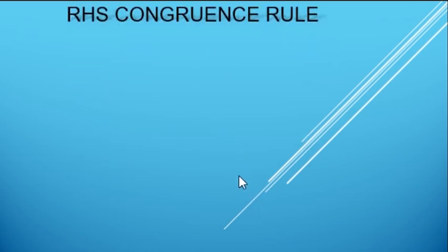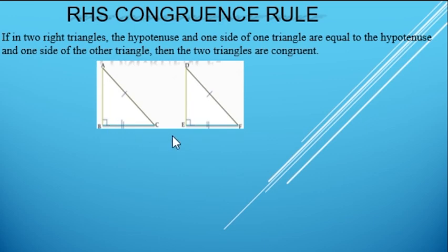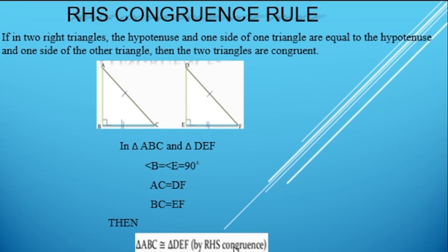Next, we have the last rule: RHS congruence rule. If in 2 right triangles, the hypotenuse and 1 side of 1 triangle are equal to the hypotenuse and 1 side of the other triangle, then the 2 triangles are congruent. Here the figures are ABC and DEF. In triangle ABC and triangle DEF, we have angle B equals to angle E equals to 90 degrees, and AC equals to DF, and BC equals to EF. Then we can say the 2 triangles are congruent to each other by RHS congruence rule.